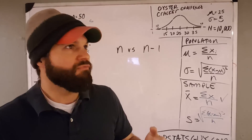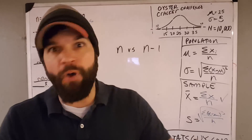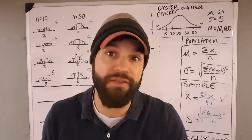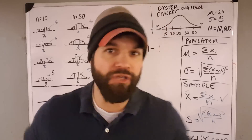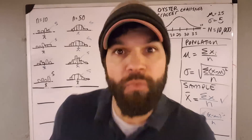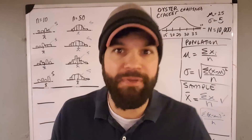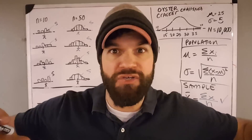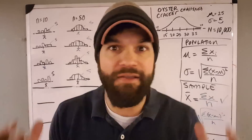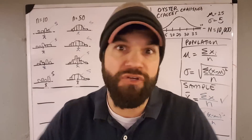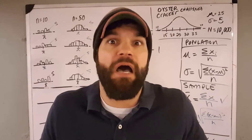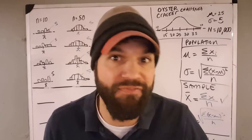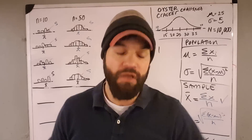Well, actually, they're both trying to do the same thing, and it has to do with where you start. Here's the deal: when you have the population and you want to calculate the standard deviation, you can calculate it using the formula for the population. That makes sense, and you actually get the standard deviation for the population.